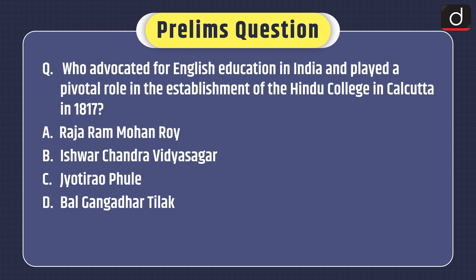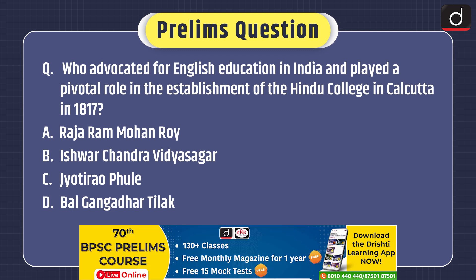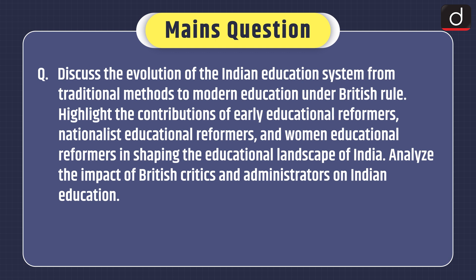Now it's time for the practice questions. Prelims-based practice question: Who advocated for English education in India and played a pivotal role in the establishment of the Hindu College in Calcutta in 1817? Options: Raja Ramohan Roy, Ishwarchandra Vidya Sagar, Jyothi Rao Phule, or Bal Gangadhar Tilak? Mains practice question: Discuss the evolution of the Indian education system from traditional methods to modern education under British rule. Highlight the contributions of early educational reformers, nationalist educational reformers, and women educational reformers in shaping the educational landscape of India. Analyze the impact of British critics and administrators on Indian education.